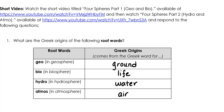Okay, let's go over our answers together, starting with the Greek origins of the following root words. Geo means ground, bio means life, hydro means water, and atmos means air.